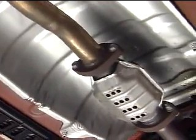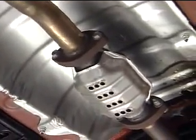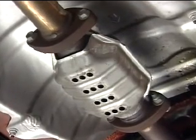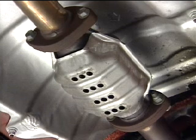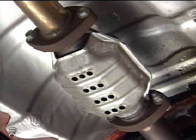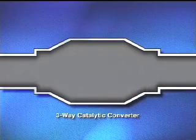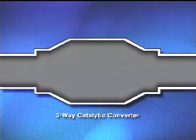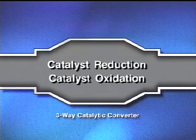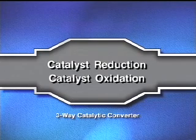Up until now, we've been focusing on pre-catalyst emissions known as engine-out gases. But in diagnosing emissions and drivability concerns, you'll be utilizing post-catalyst emissions readings. When the engine-out gases reach the three-way catalytic converter, two chemical processes occur: catalyst reduction and catalyst oxidation.